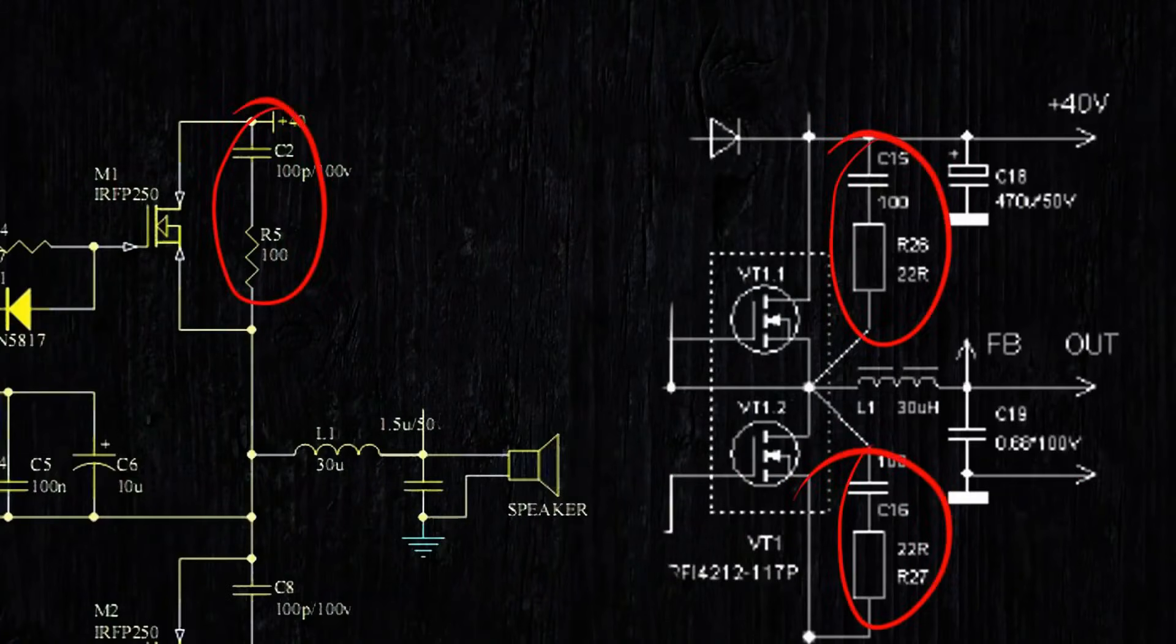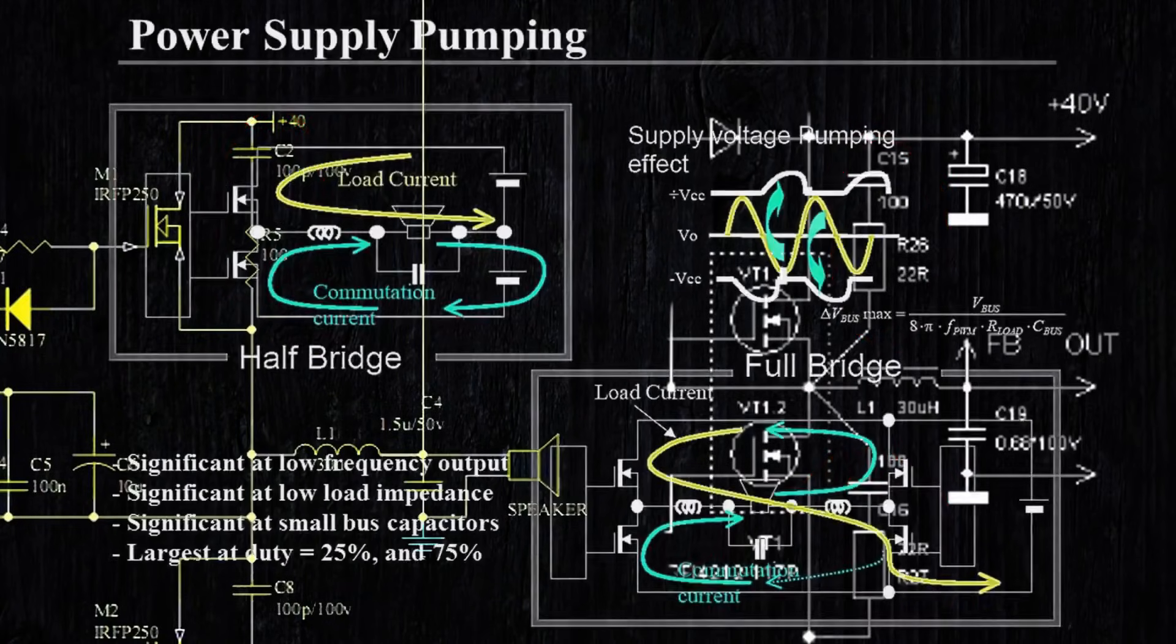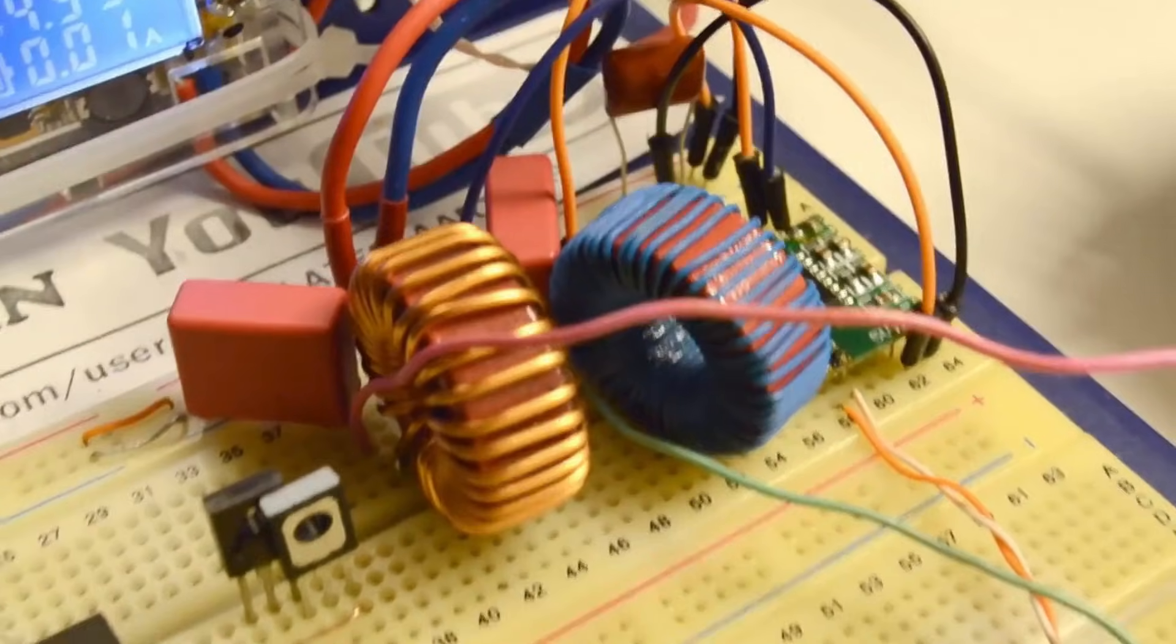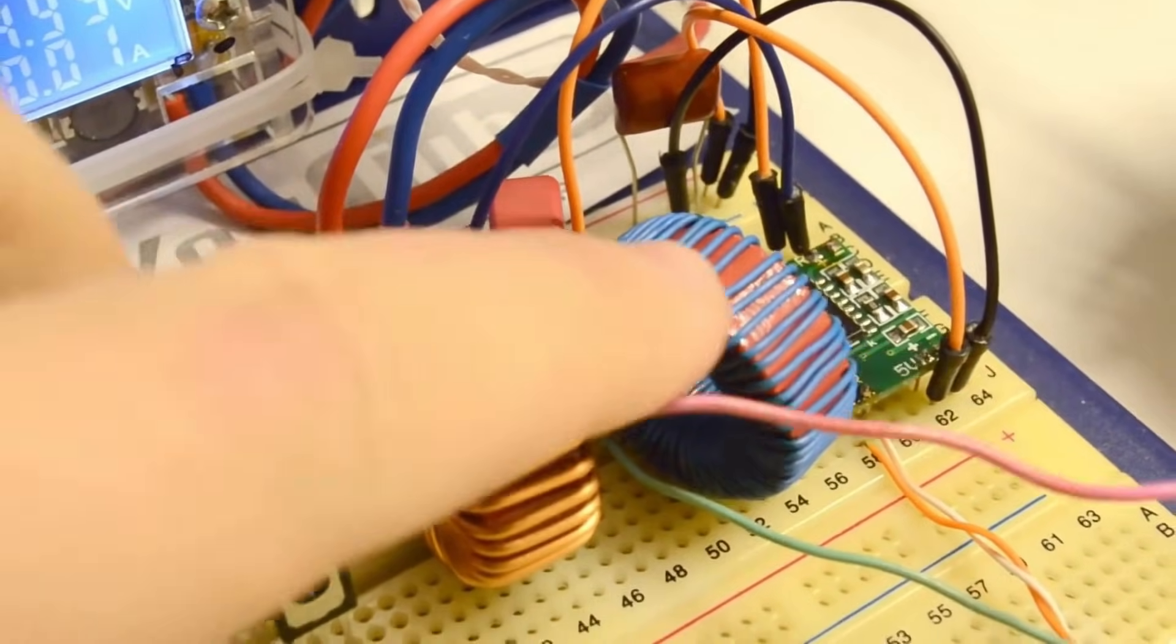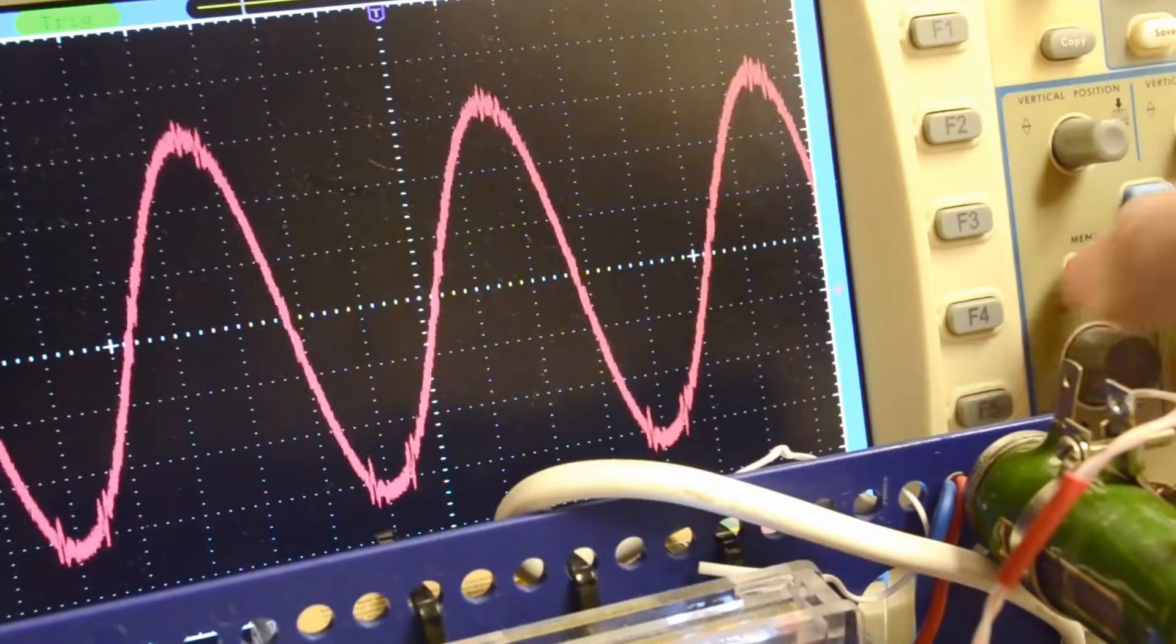When using a half-bridge circuit, ensure the presence of an RC snubber to reduce the likelihood of output transistor failure due to over-voltage. When using cheap class D amplifier modules with a missing or poor quality output filter, you can improve the sound by adding an additional LC filter.